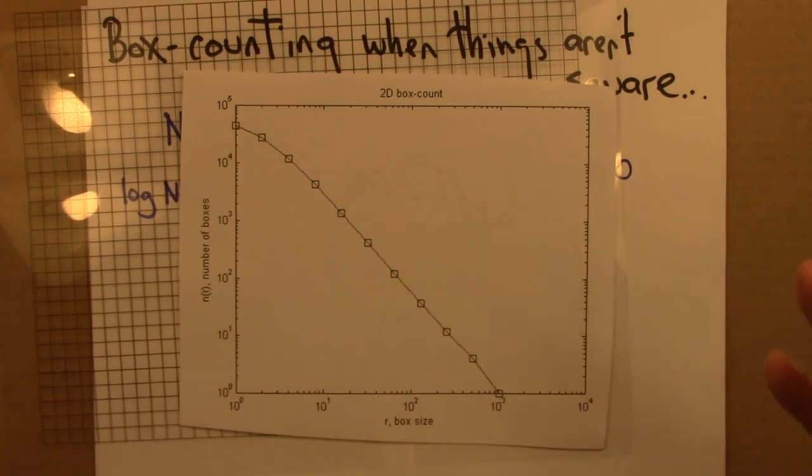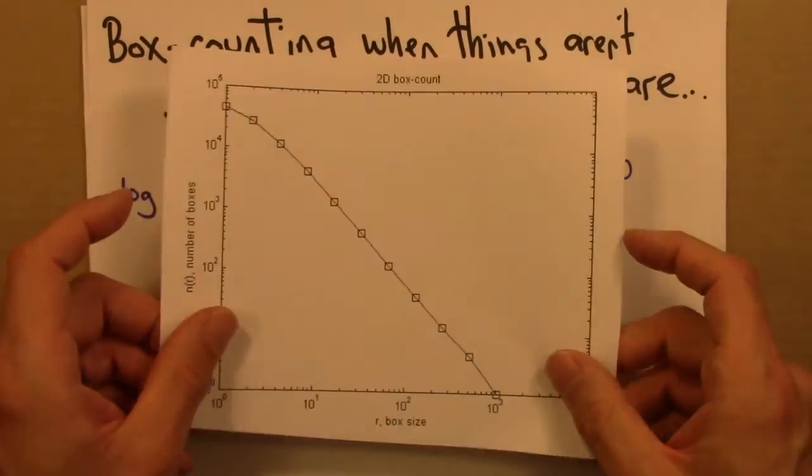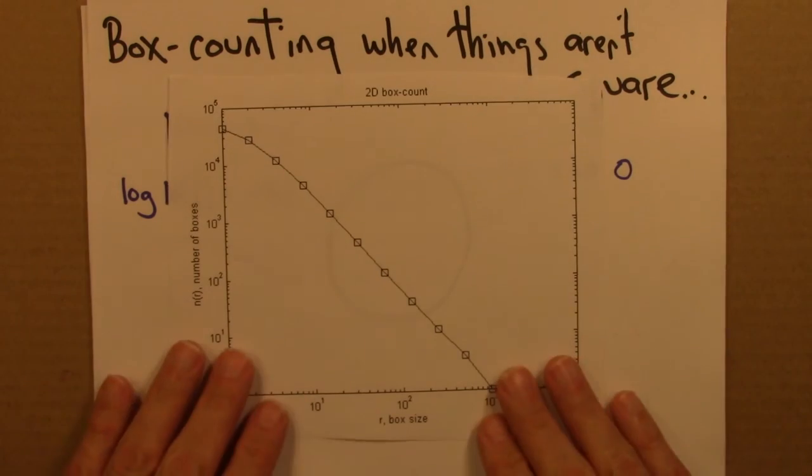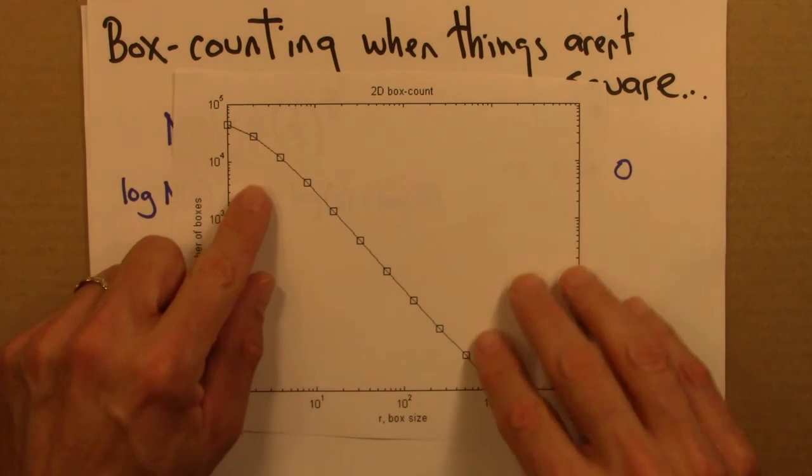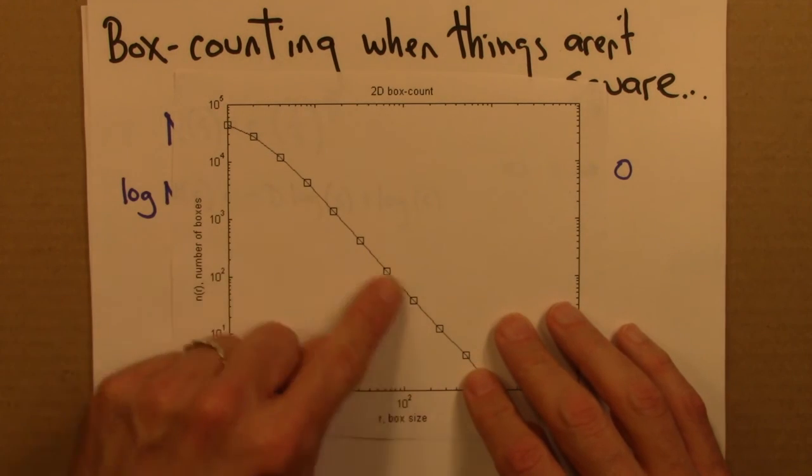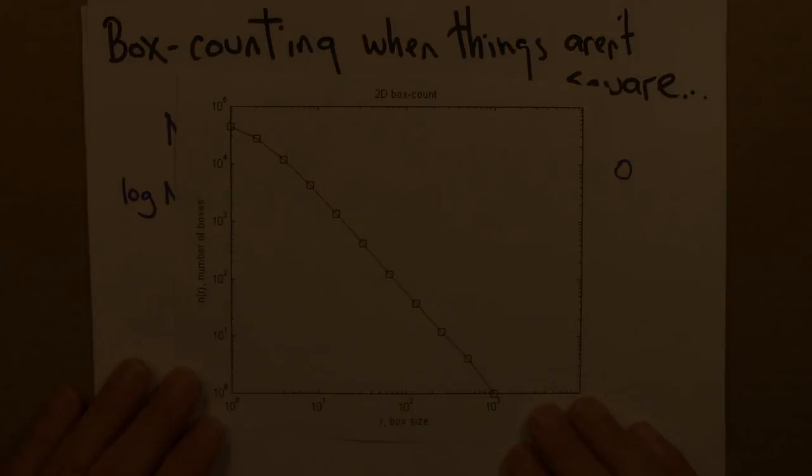In any event, again the moral of the story is that box counting is a simple idea. And a nice clean conceptual idea I think. But in practice can be difficult to get too exact. To get a very exact number out of it can be required. Thank you.